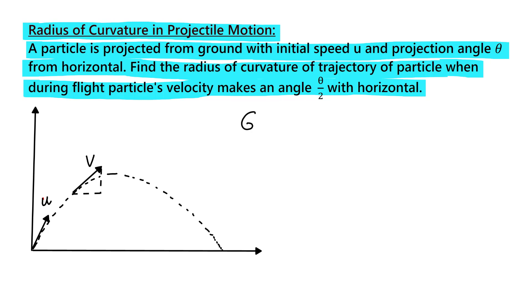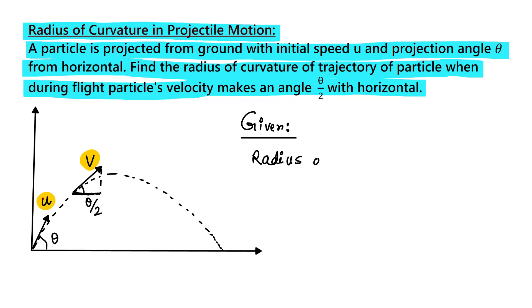Let us see what is given in this problem. The projectile is initially thrown with speed u and the angle of projection is theta. After some time, the velocity makes an angle theta by 2 with the horizontal. At that point, the velocity of the projectile is v. We have to find the radius of curvature.